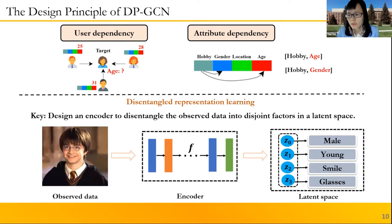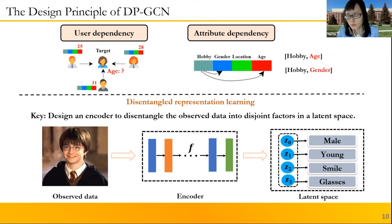For example, if we use a vector to describe a boy as the picture shows, we can disentangle the observed vector into different latent representations Z0, Z1, Z2, Z3, which are corresponding to the boy's gender, age, emotion, and appearance, respectively. The key in disentangled representation learning is how to design an encoder to disentangle the observed data into disjoint factors in a latent space.